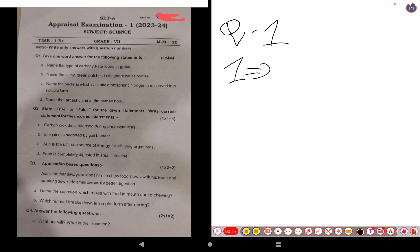The first question is: name the type of carbohydrate found in grass. The type of carbohydrate found in grass is cellulose, so cellulose is the correct answer.